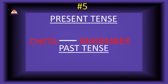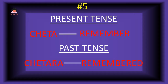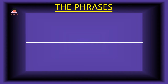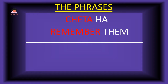Word number five. Present tense: 'cheta,' which means 'remember.' The past tense of cheta is 'chetara.' Present tense phrase: 'chetaha,' which means 'remember them.' Past tense: 'e-ke taram' — I remembered.